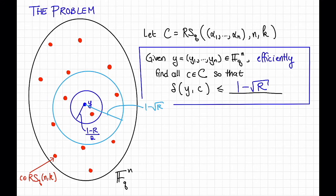We can phrase this problem equivalently in terms of polynomials. So equivalently, if we're given y, we'd like to efficiently find all of the polynomials of low degree that agree a lot with y.